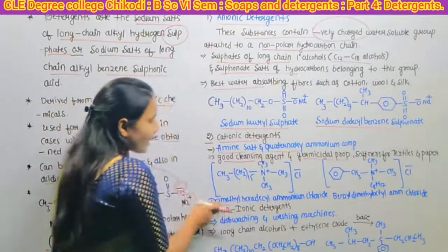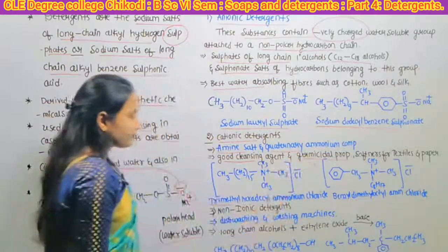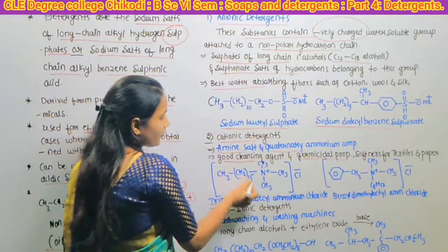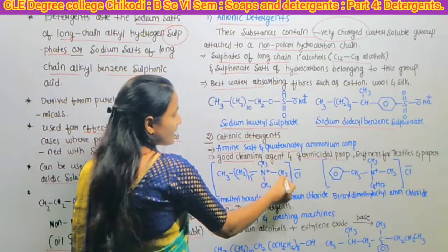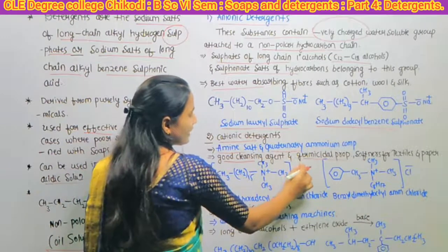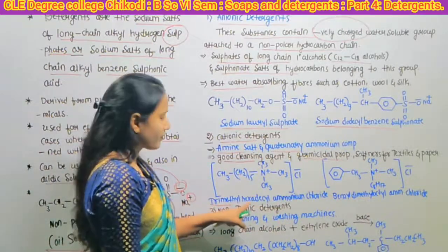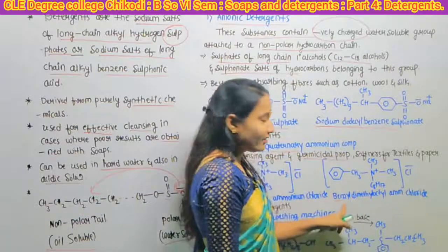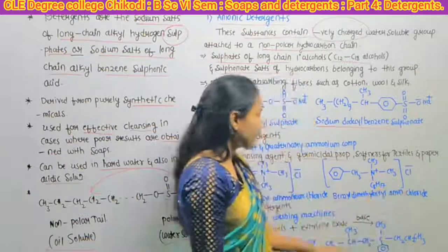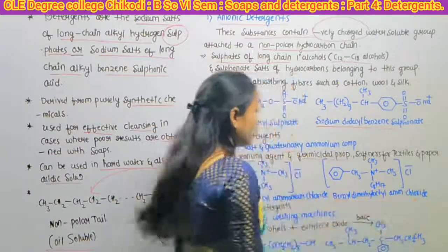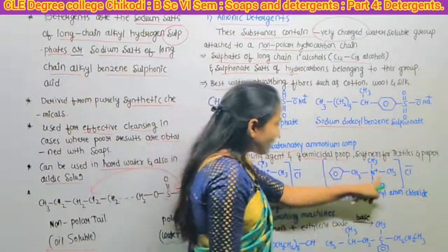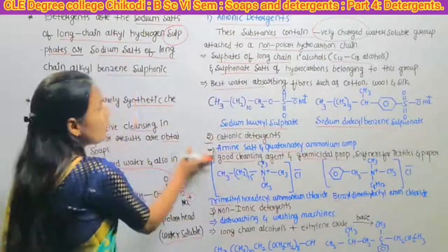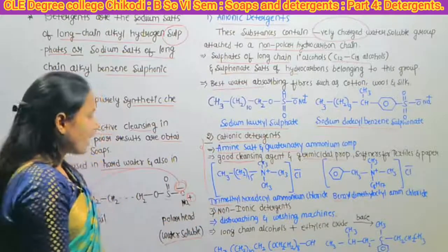Examples of cationic detergents: trimethyl hexadecyl ammonium chloride, with the formula CH3-(CH2)15-N+(CH3)3 Cl minus. The next example is benzyl dimethyloctyl ammonium chloride. These are all about cationic detergents.